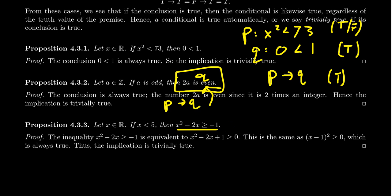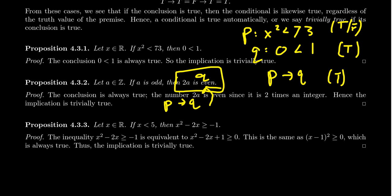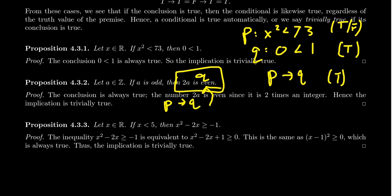This example illustrates that when you first look at the conclusion, it might not be obvious that it's always true. In this case, maybe you didn't see it at first. But one can show that the conclusion is true, and therefore the if-then statement is also true. If the conclusion is true, this implication is true regardless of the premise.